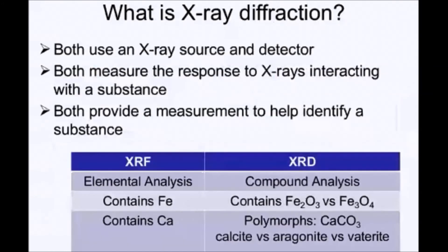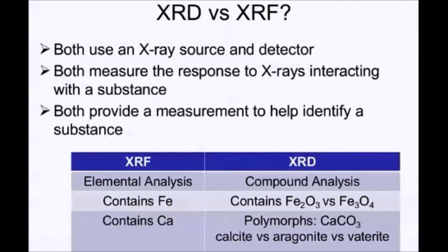The distinguishing difference between the two techniques is elemental versus mineralogy. Both techniques use an X-ray source, both measure the response to X-rays interacting with a substance, and both help identify a substance. The difference is that XRF is elemental — with XRF you would be able to analyze and detect iron regardless of its state.